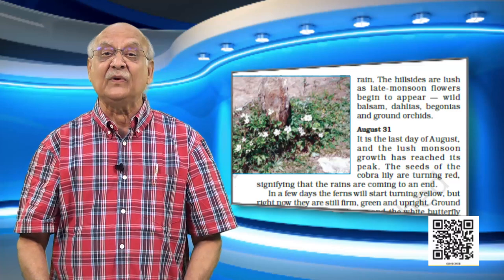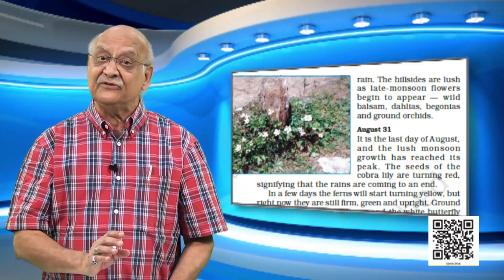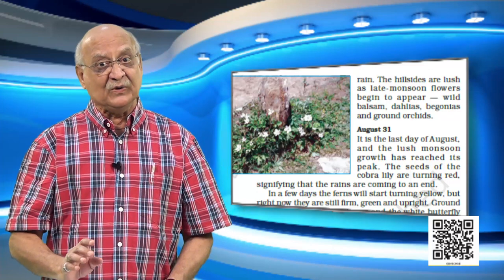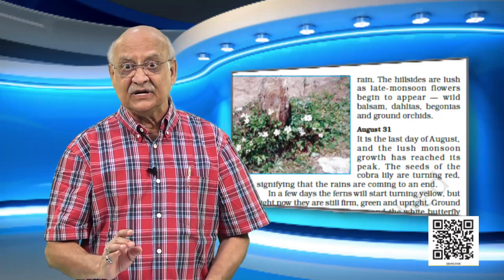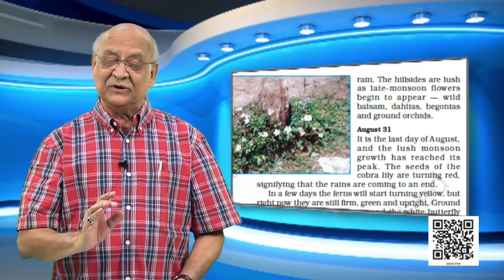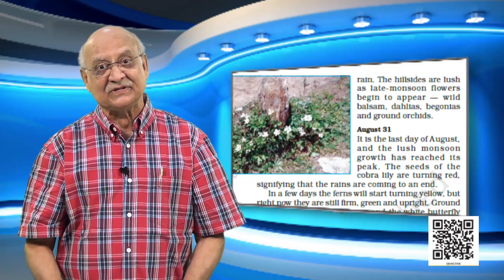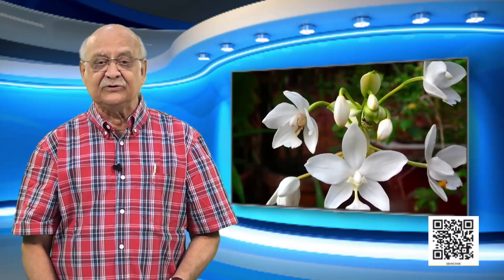Turn the page over — there is a beautiful picture showing lots of flowers which have grown because of the rain. The interesting thing about August is that the rains are almost ending and there is sunlight sometimes. So when there is sunlight and rain, you see new things growing. Ruskin Bond, at the top of page 116, notices that the hillsides are full of flowers now. The flowers begin to appear: wild balsam, dahlias, begonias, and ground orchids.